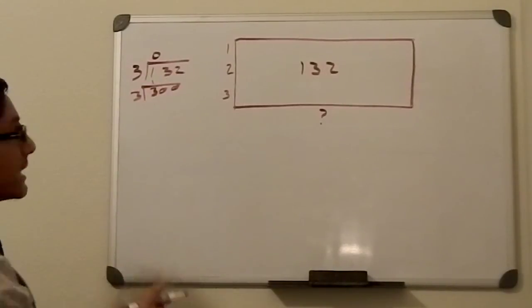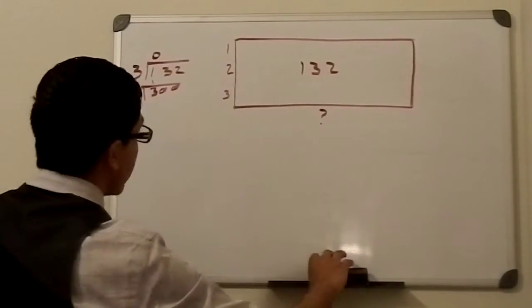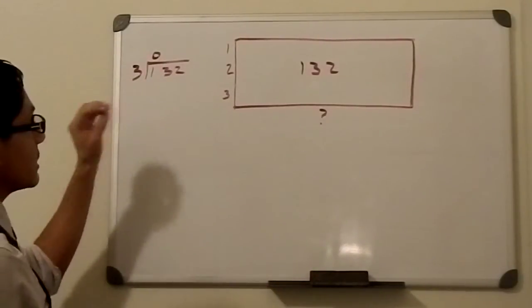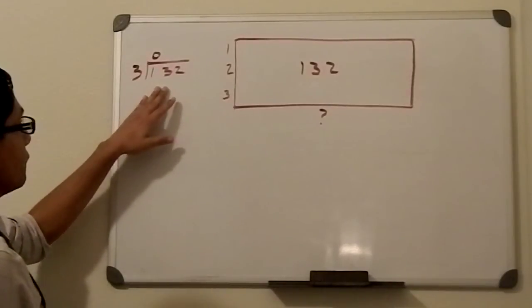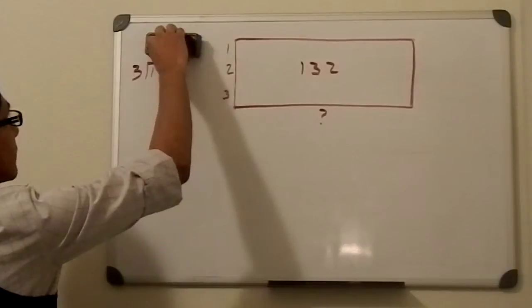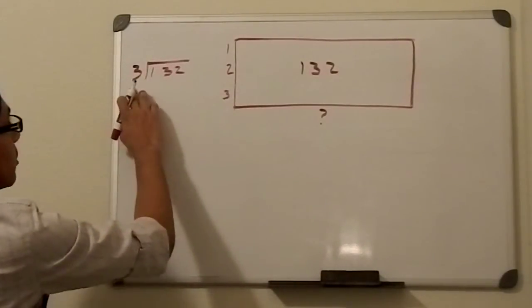All right, because if we think about it logically, it does go in 33 times. So here, why don't I just show you that? If we go at this literally, we can do 3 into 100 goes in 33 times.